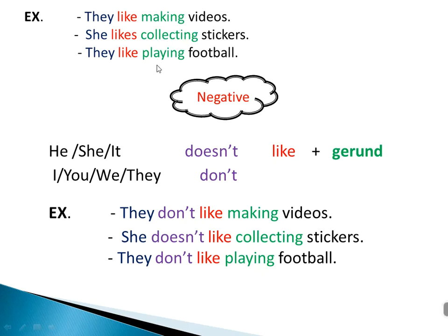'They like playing football.' After 'like' and 'likes', we use verb plus '-ing'. Now for the negative: we use 'doesn't' and 'don't'. 'Doesn't' is used with 'he', 'she', 'it', and singular nouns. 'Don't' is used with other pronouns.